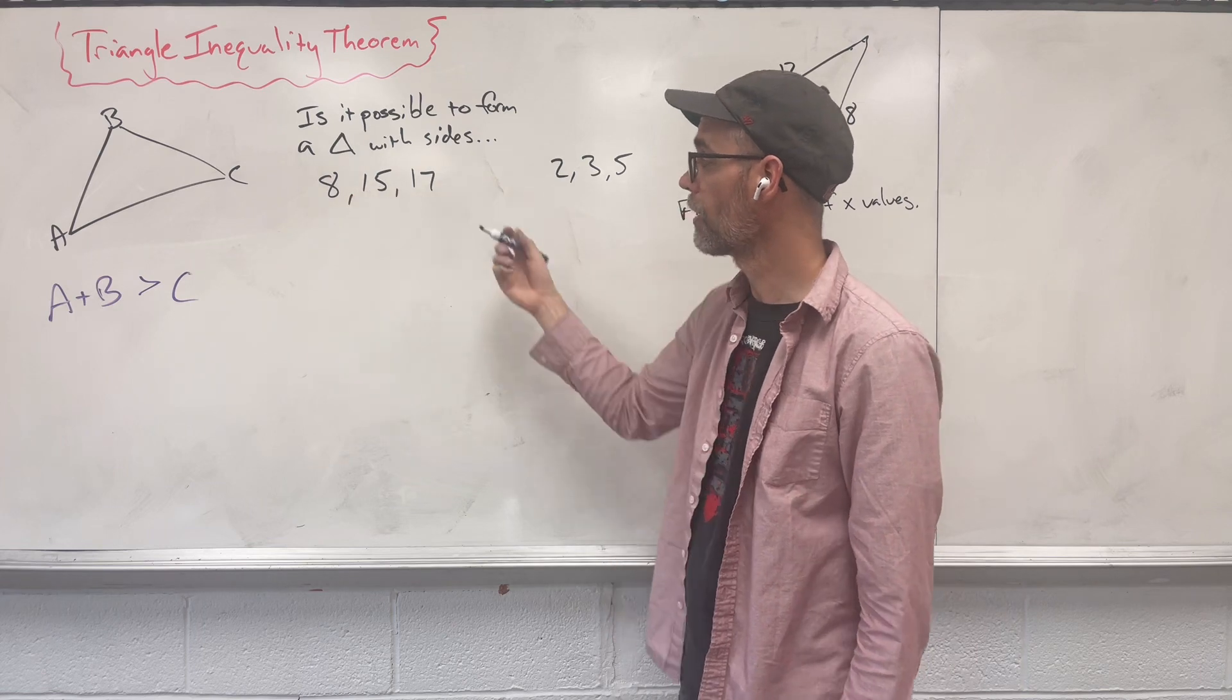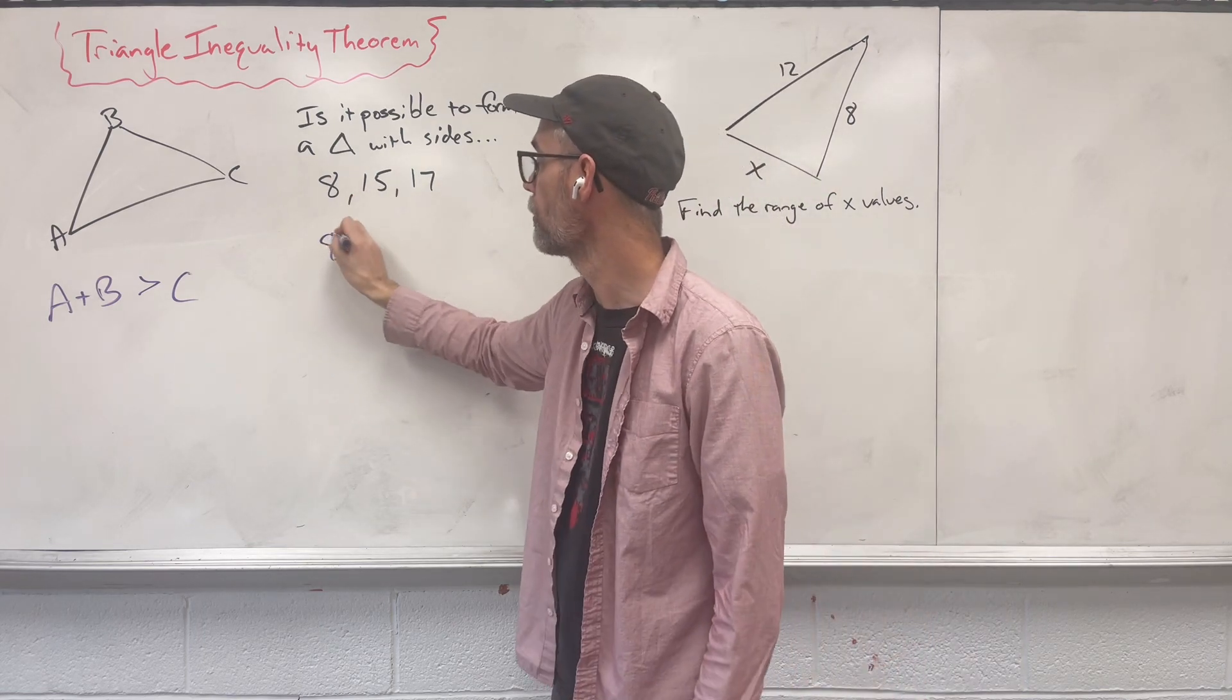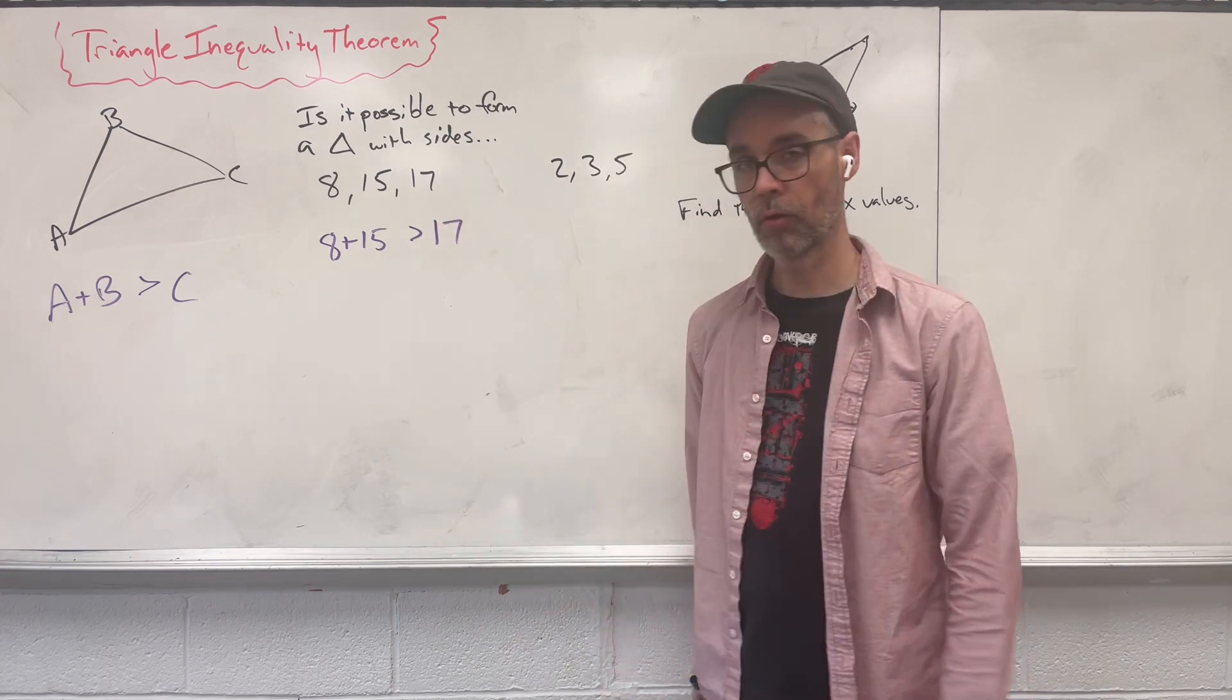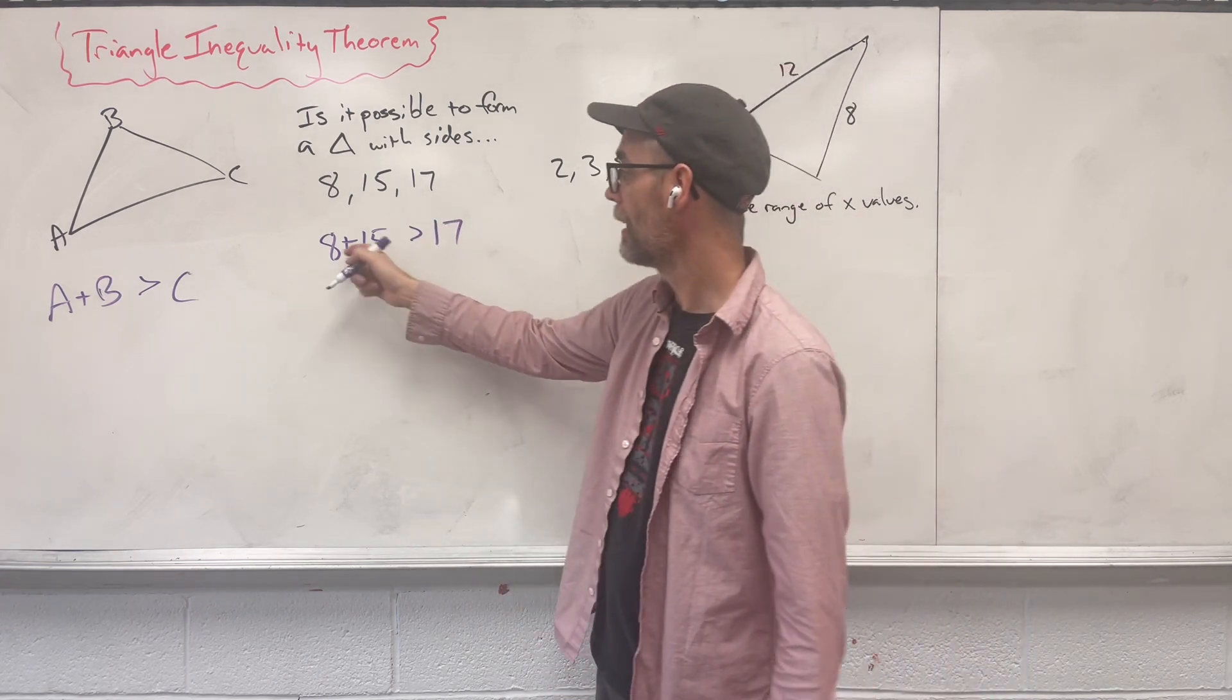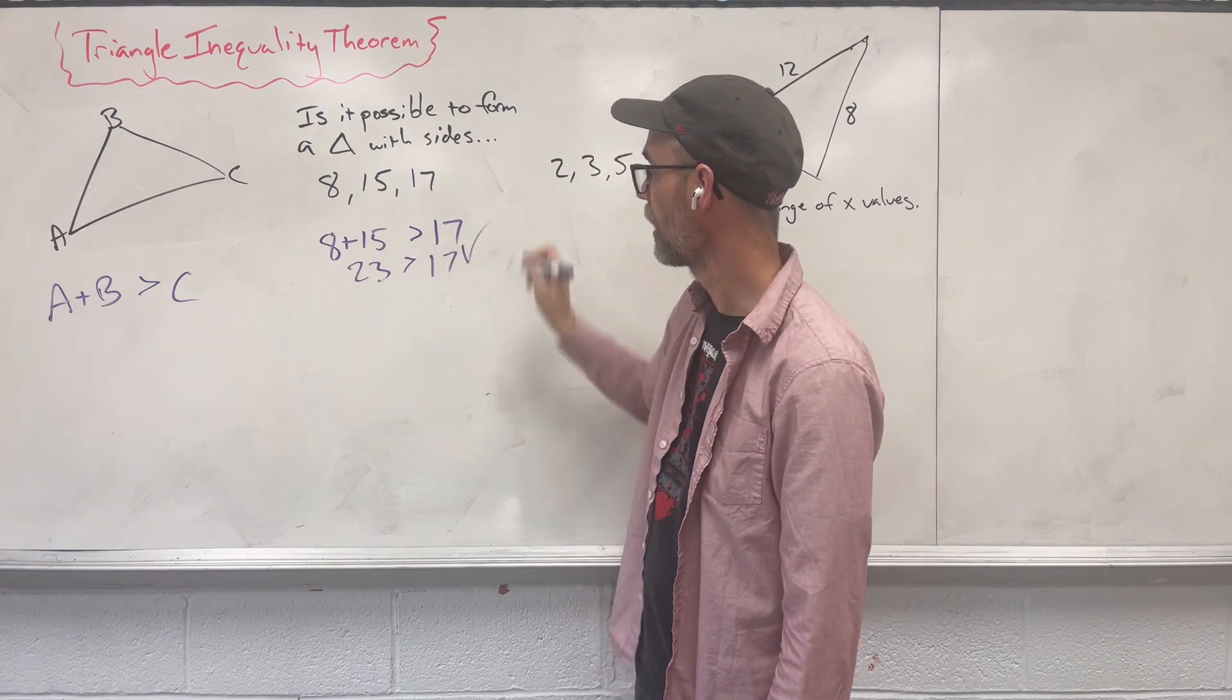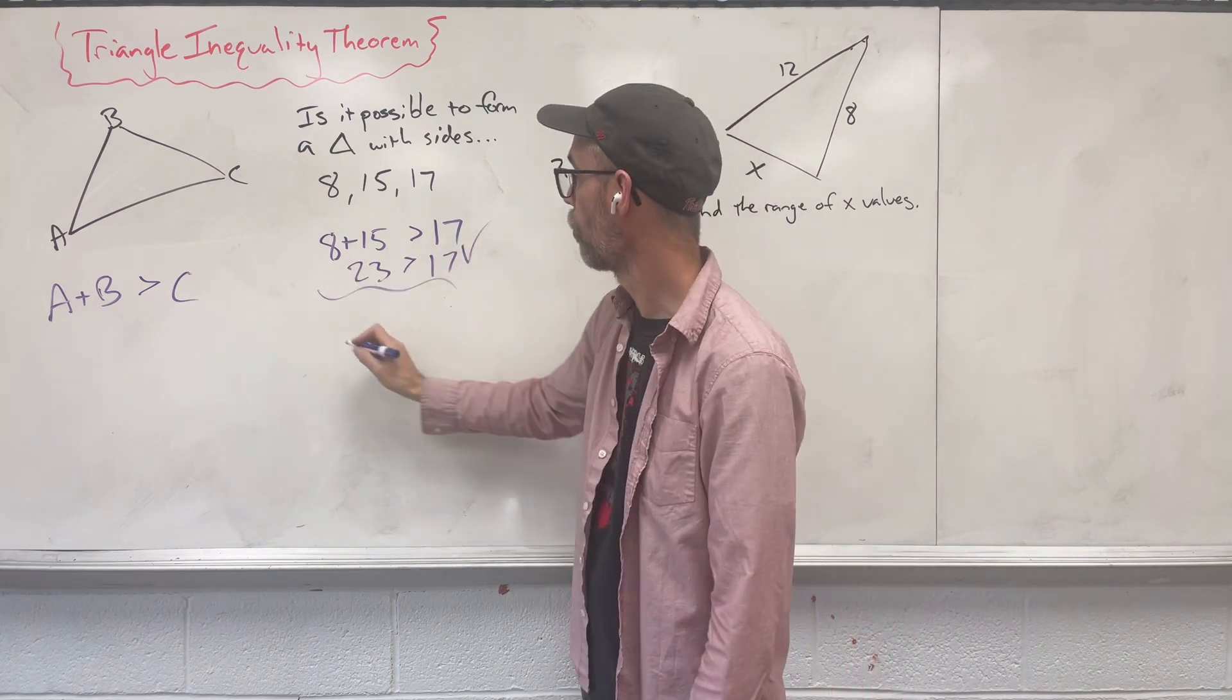We've got sides 8, 15, and 17. Let's put them together. Take two sides, add them up, are they larger than your third side? Well, 8 and 15 gives us 23, which is greater than 17. Did that statement make sense? Yes, that's once.